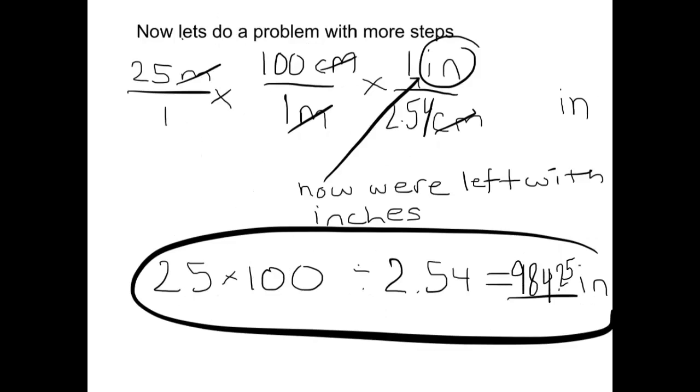Now let's do a problem with a couple more steps. So if we start with 25 meters and we want to try to get it into inches, first we put it over one. So it's 25 meters over one. Then we have to find a card with meters on the opposite side of the fraction, so we multiply by 100 centimeters over one meter.